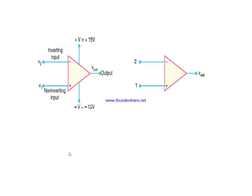Now, this is the schematic symbol of an op-amp. We have two input terminals V1 and V2, denoted as plus and minus. These plus and minus signs are not the polarity of the voltage — they do not mean you have to give positive voltage at V1 and negative voltage at V2. The plus and minus indicate the non-inverting terminal and the inverting terminal respectively. So V1 is the non-inverting input and V2 is the inverting input.